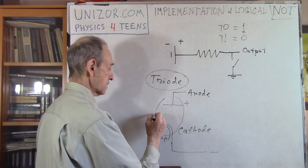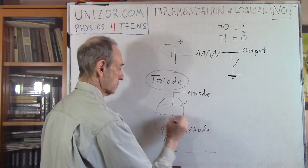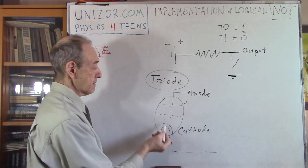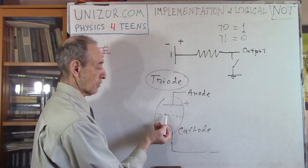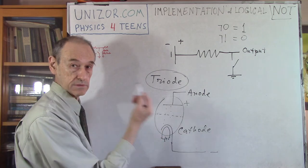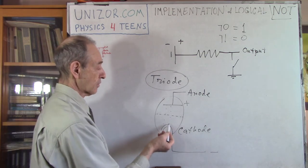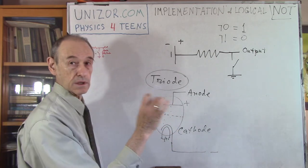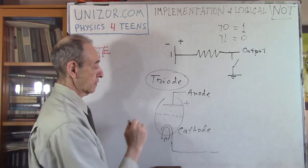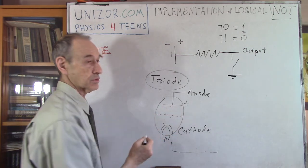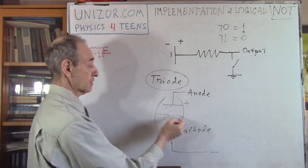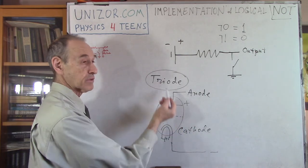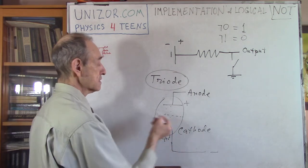What triodes introduce is a grid here. If grid is positive, then it actually accelerates the electrons, because positive grid attracts. It accelerates electrons. Some of them probably will hit the grid, but most will go through the openings in the grid and will fly to anode. If we increase the positive potential of the grid, the speed will be increased as well, so the current will be greater. This is a triode.